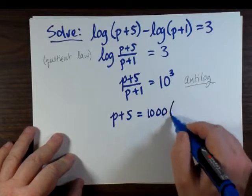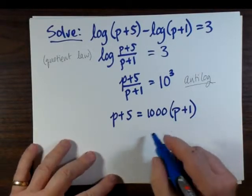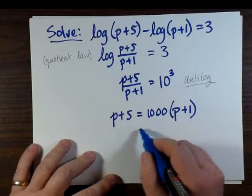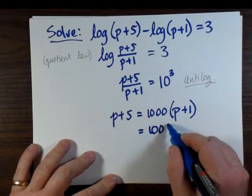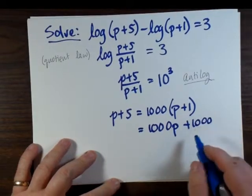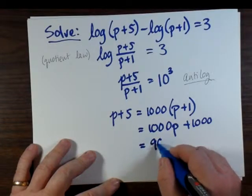So now we can multiply both sides by p plus 1. And that's 1,000 times p plus 1 equals p plus 5. Now we can distribute the 1,000 into p plus 1. And that's 1,000p plus 1,000, and that's still equal to p plus 5.